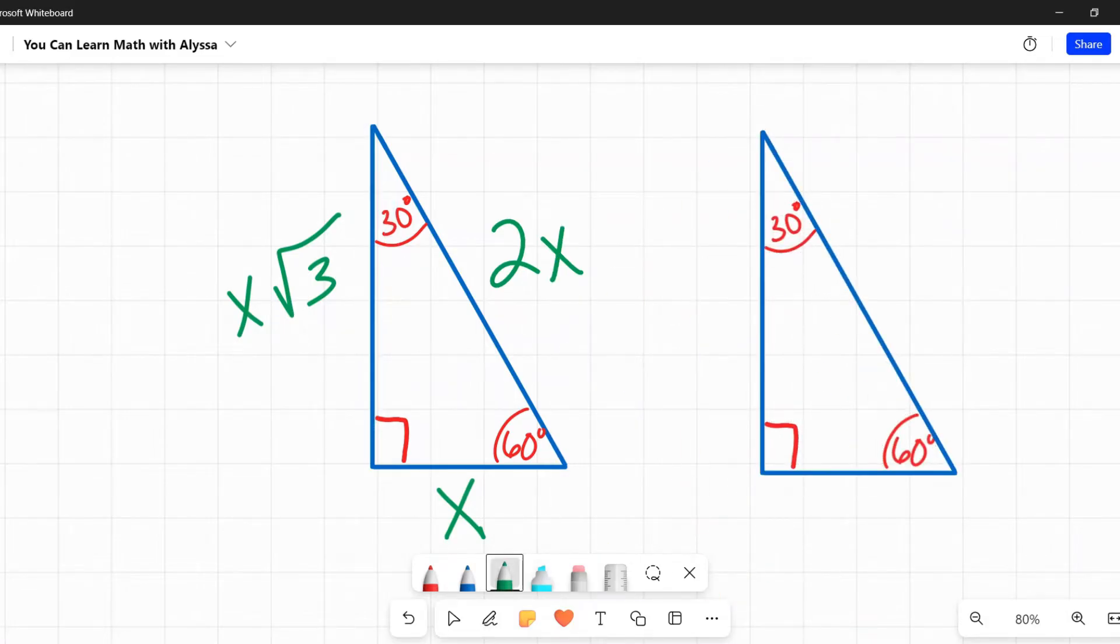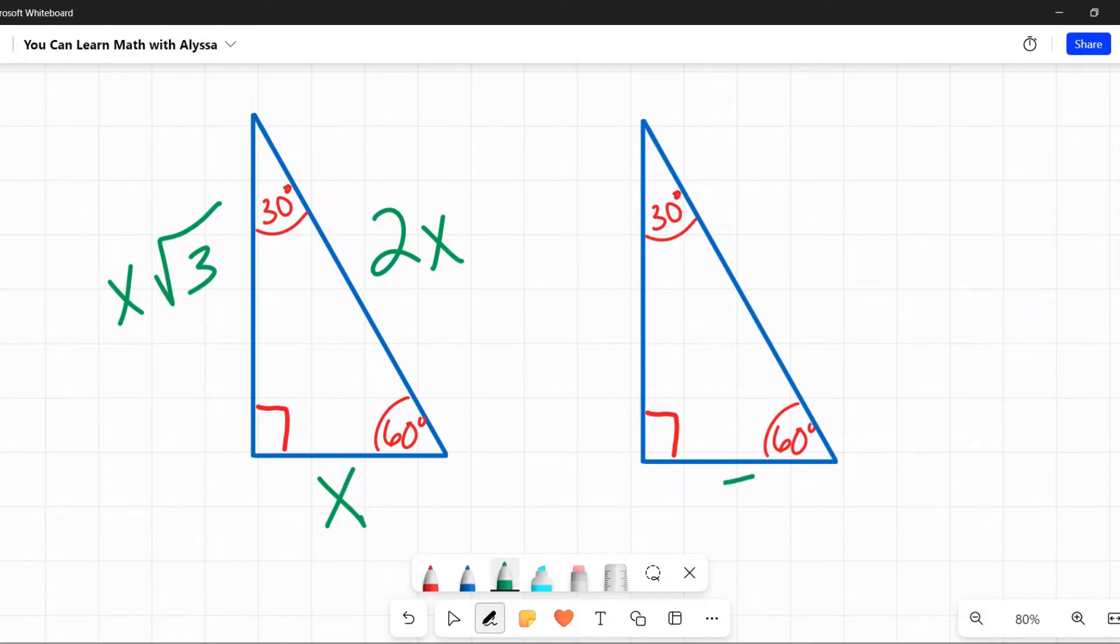To show you how we would use this: if they give you the side that's down here that corresponds to X, you would then just multiply it by two to get this side and by square root of three to get this side.